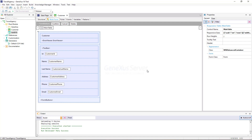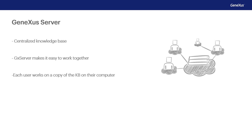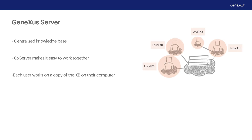Now we'll upload this knowledge base to a GeneXus server in the cloud. Even though it's not mandatory, we should use GX Server to keep a history log of the activities performed as part of the project, if there's more than one person working on the same knowledge base. GeneXus Server allows centralizing our KB, and facilitates management if we work together on it, even if the users are in different geographical locations. Each developer works on their own local copy of the KB, which is connected to the centralized KB managed by GX Server, allowing any authorized developer to send and receive modifications from their own workplace, while GeneXus Server consolidates the changes made by each developer.